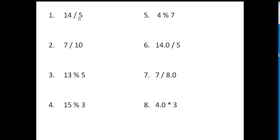14 divided by 5 is 2, because an int divided by an int has to be an int. So it's not 2 point anything, it's just 2. Number 2: 7 divided by 10. Well, 10 goes into 7 zero times, so it's an int — 0. Not a decimal, not 7 tenths.